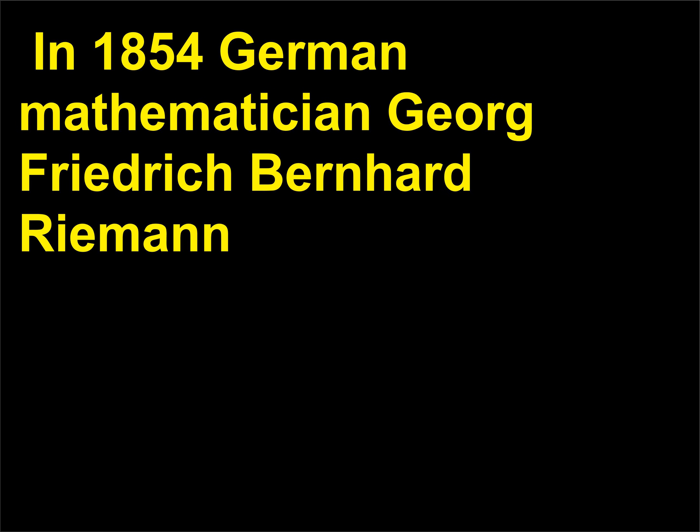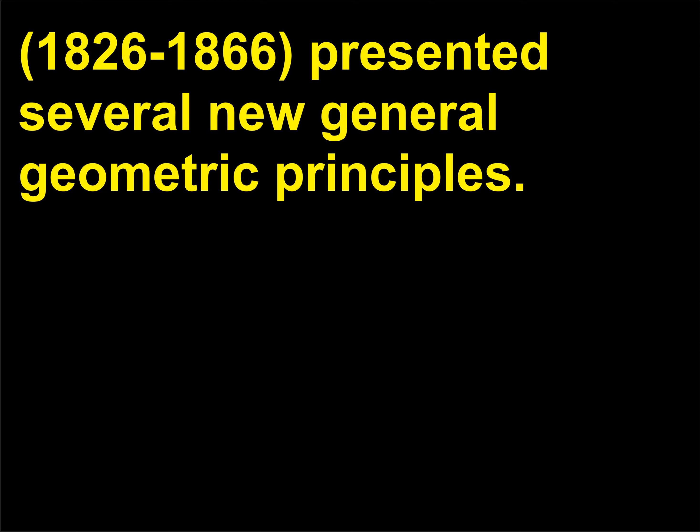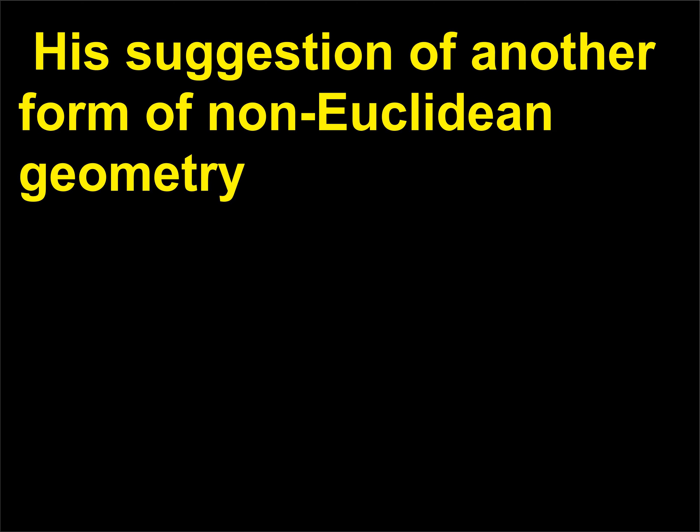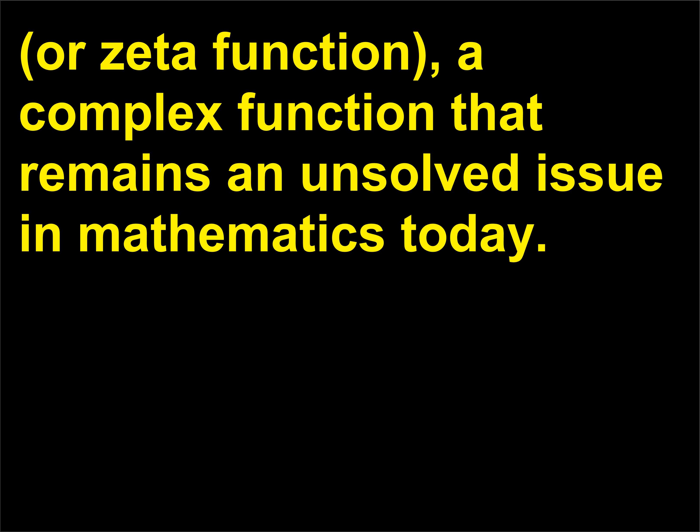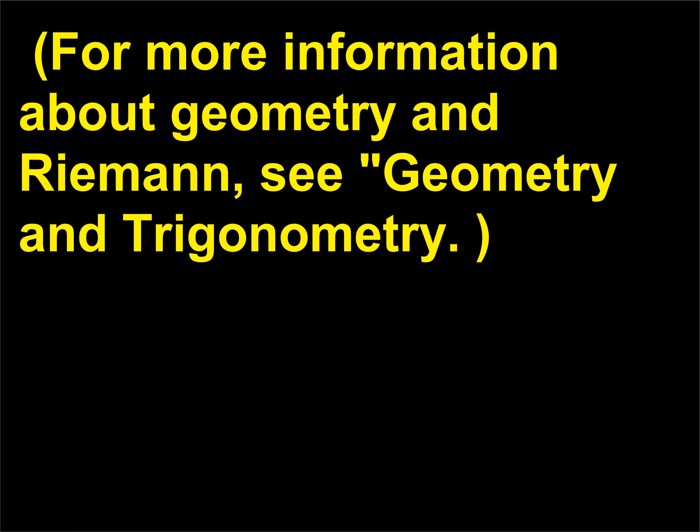In 1854, German mathematician Georg Friedrich Bernhard Riemann, 1826–1866, presented several new general geometric principles. His suggestion of another form of non-Euclidean geometry further established this new way of looking at geometry. Riemann was also responsible for presenting the Riemann hypothesis, or zeta function, a complex function that remains an unsolved issue in mathematics today. For more information about geometry and Riemann, see geometry and trigonometry.